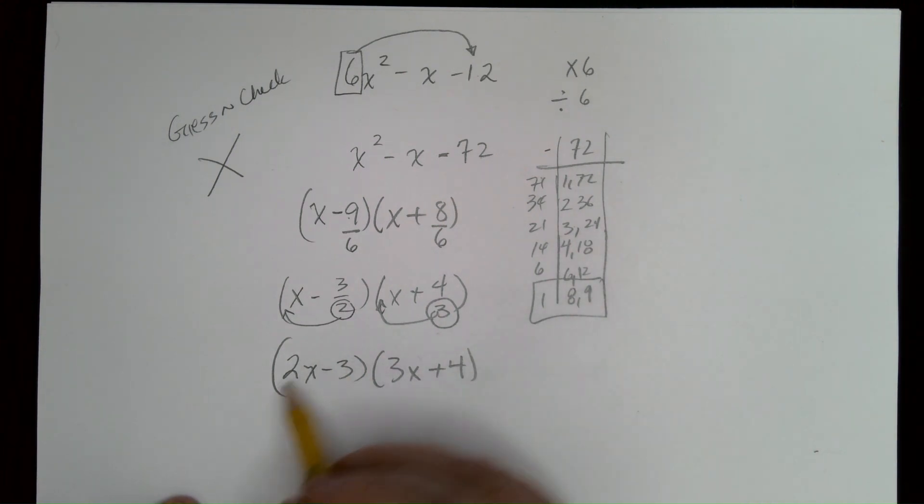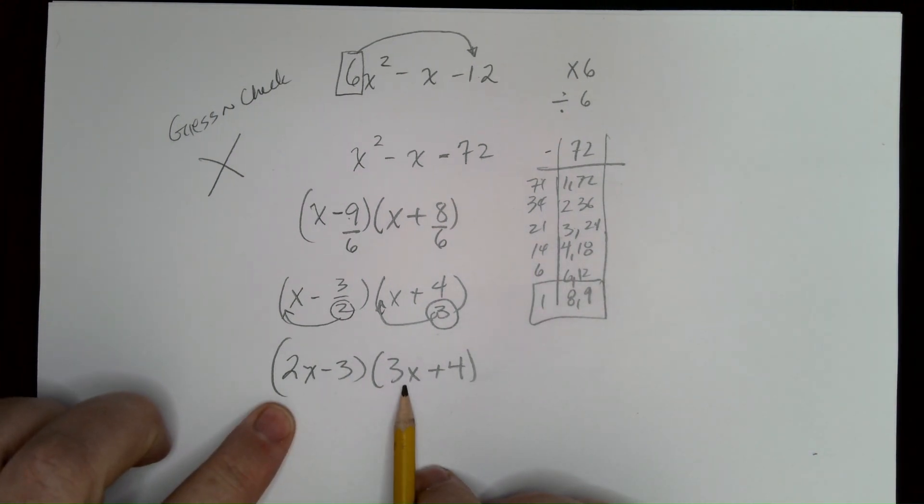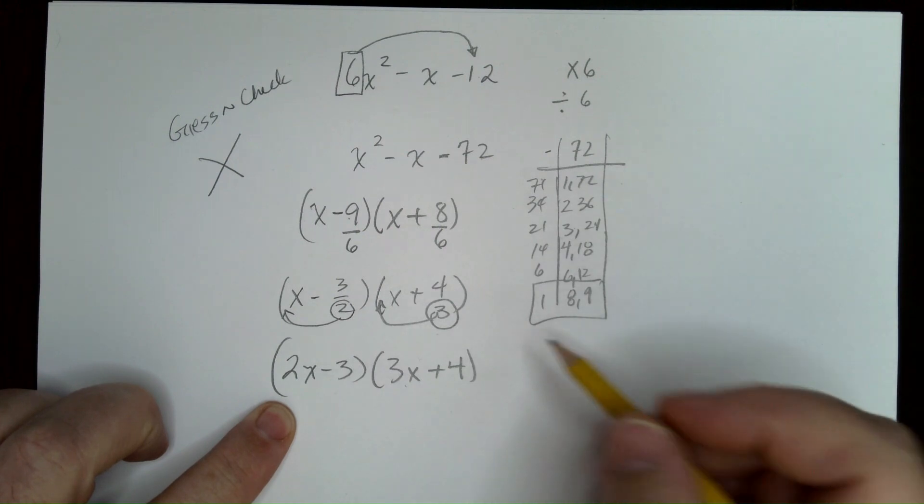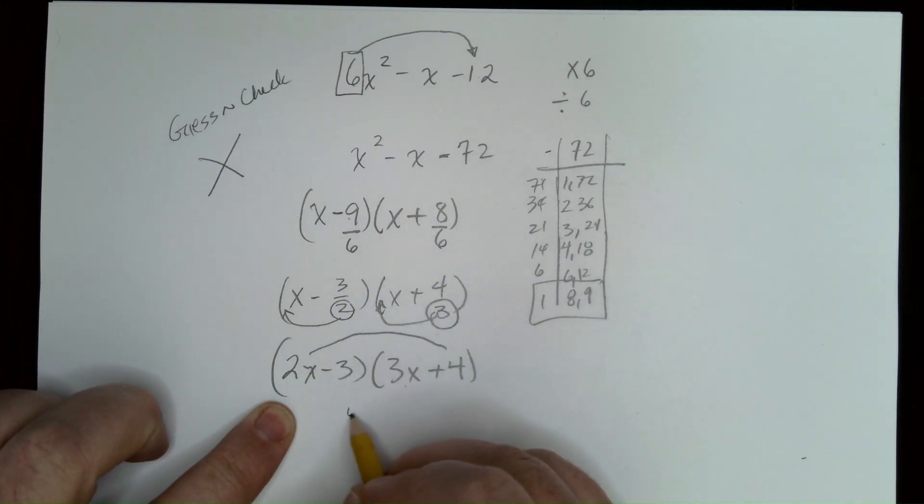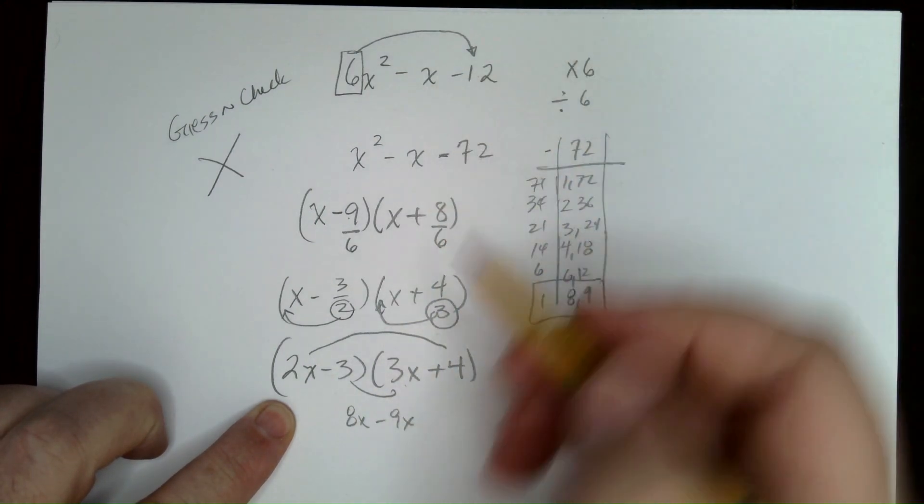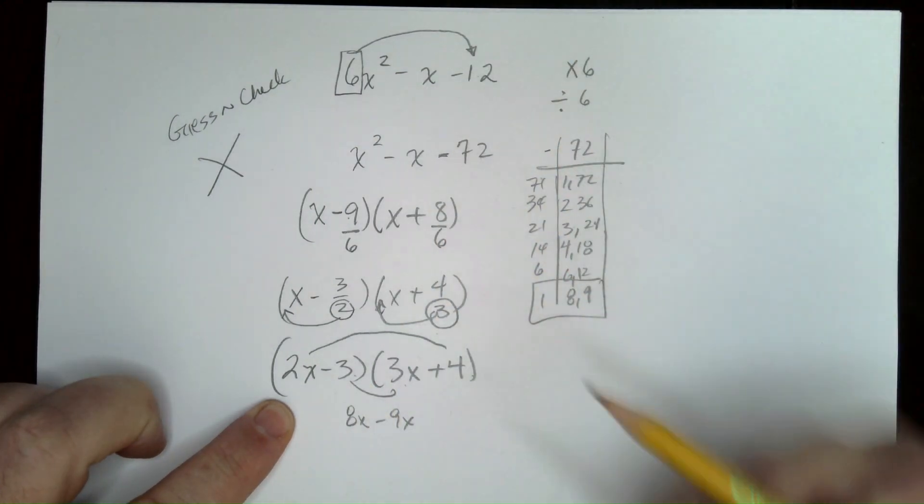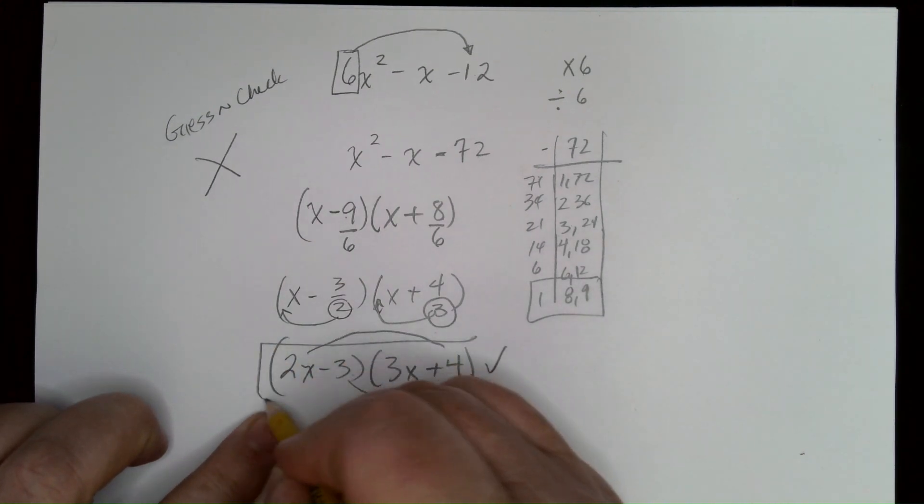Now, if we did want to check it, we could, of course, see that it does make 6x squared using foil, right? Outside is 8x. The inside is negative 9x. Those two make negative 1x. And, of course, negative 3 times 4 is negative 12. So, it works. That is our answer.